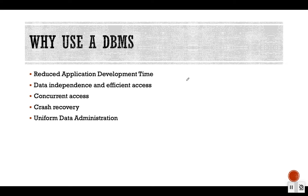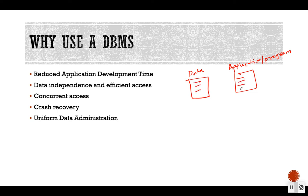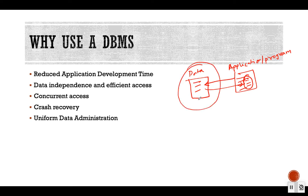In a database management system, we keep the data and the application programs separate from each other. When the application needs data, it fetches that data from the database management system and shows it in the application or program. Keeping the data and application programs separate makes access more efficient and keeps the data more secure.